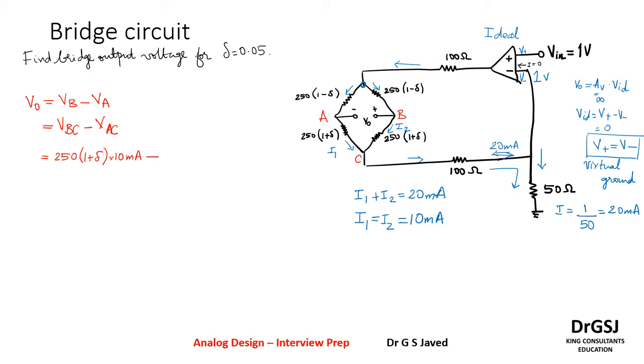Sorry, I think there was a mistake in the question. Let me correct it. So the correction is this is actually flipped. So this is (1 plus delta) and this is (1 minus delta).